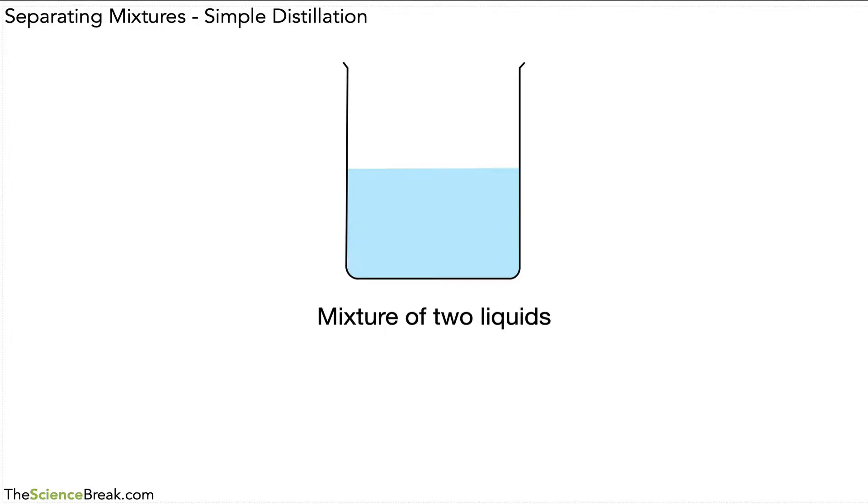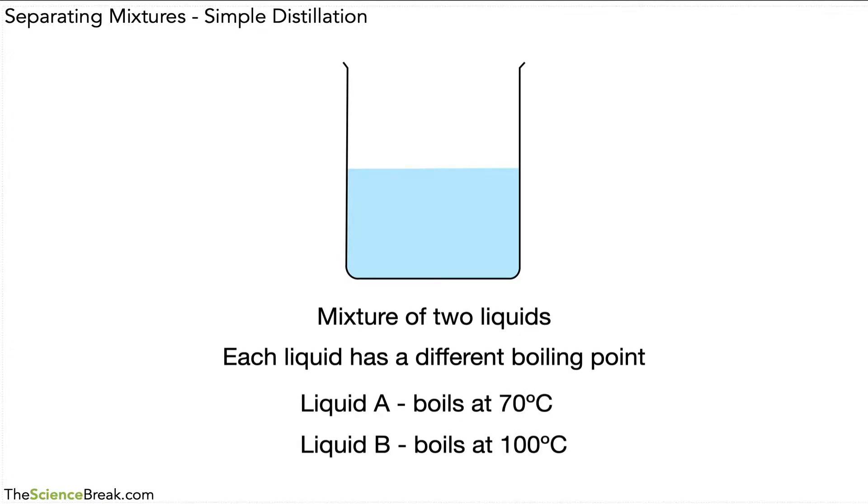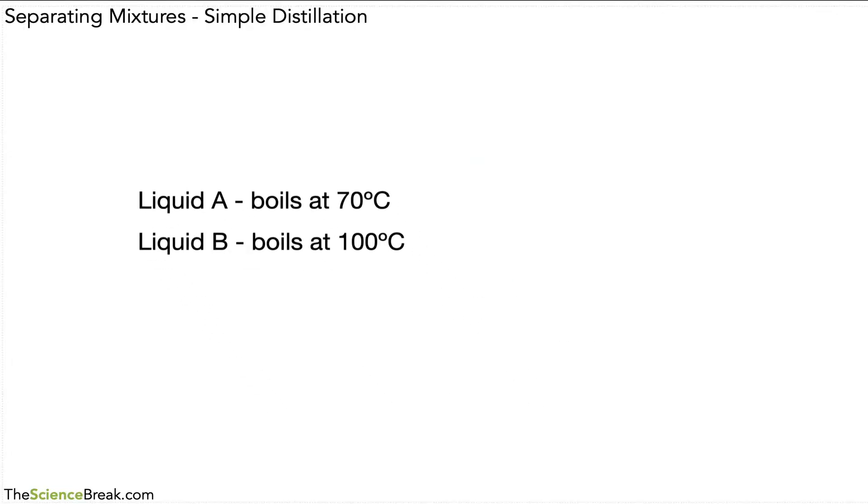Well, there's one bit of information that will help us separate these two liquids: each liquid has a different boiling point. We're going to call them Liquid A that boils at 70 degrees and Liquid B that boils at 100 degrees centigrade. So we need a specific set of apparatus.